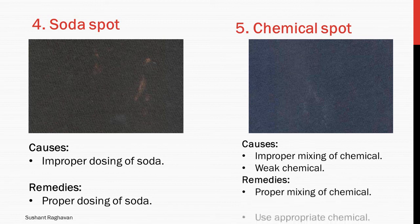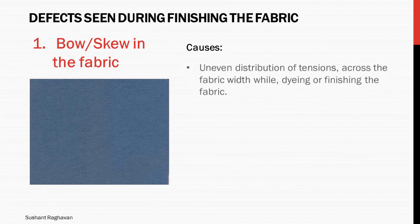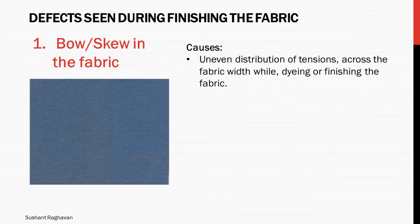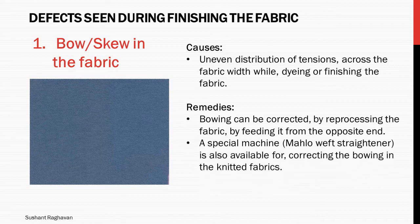Defect seen during finishing the fabric. Bow or skew in the fabric. Causes: uneven distribution of tension across the fabric width while dyeing or finishing the fabric. Remedies: bowing can be corrected by reprocessing the fabric by feeding it from the opposite end. A special machine, the weft straightener, is also available for correcting bowing in knitted fabrics.